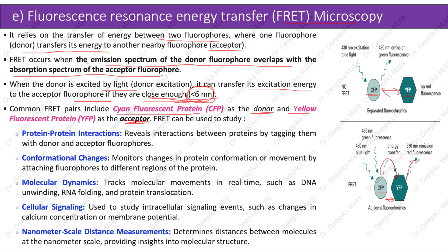When the distance between CFP and YFP is less than six nanometers, YFP emits 530 nanometer light showing red fluorescence. FRET can be used to study protein-protein interactions by tagging proteins with donor and acceptor fluorophores.